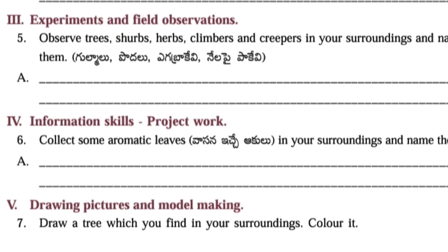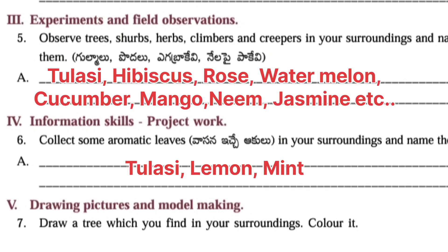Next: Experiments and field observations. Observe trees, shrubs, herbs, climbers and creepers in your surroundings and name them. Answer: Tulasi, hibiscus, rose, watermelon, cucumber, mango, neem, jasmine etc.